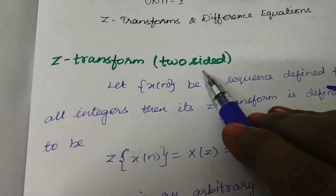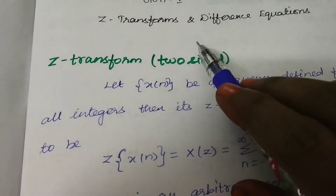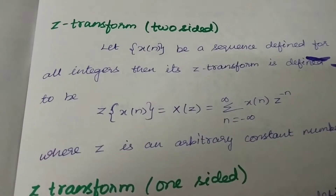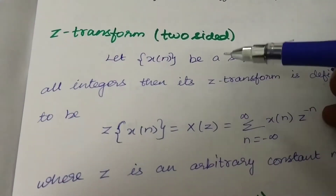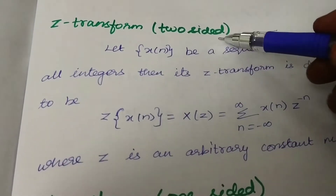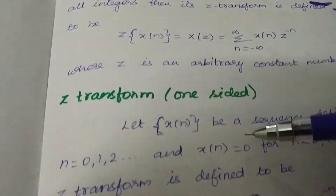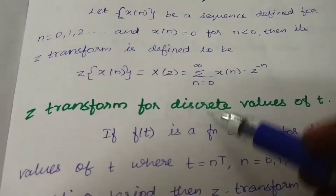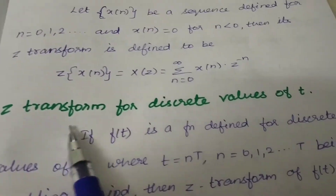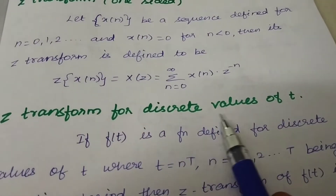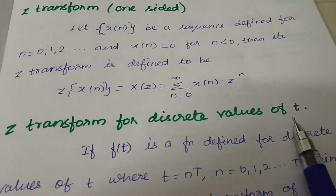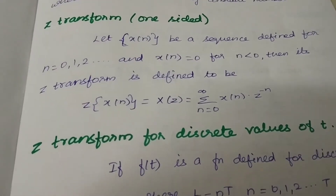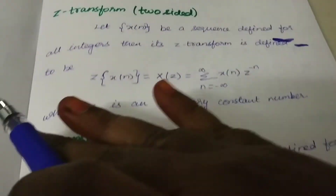So we will get to the topic. Z-Transforms are of 3 types: 2-sided Z-Transforms, 1-sided Z-Transforms, and Z-Transforms for discrete values of t. So 3 different types are there.